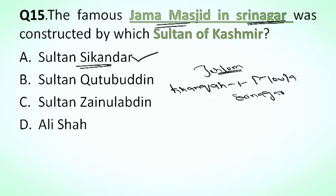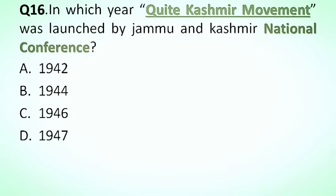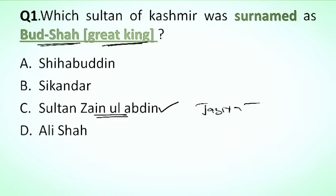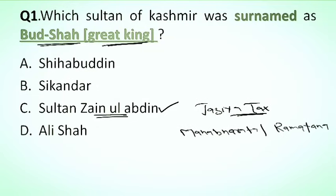In which year was the Quit Kashmir movement launched by the Jammu and Kashmir National Conference? You have to write the answer in the comment section. Your options are 1942, 1944, 1946, and 1947. Next: which Sultan of Kashmir was surnamed Badshah or Great King? Options: A. Shihabuddin, B. Sikandar, C. Zainul Abidin, D. Alisha. The correct answer is Sultan Zainul Abidin, also known as Badshah or Great King. He abolished the Jizya tax on non-Muslims and translated the Mahabharata and Ramayana into Persian.